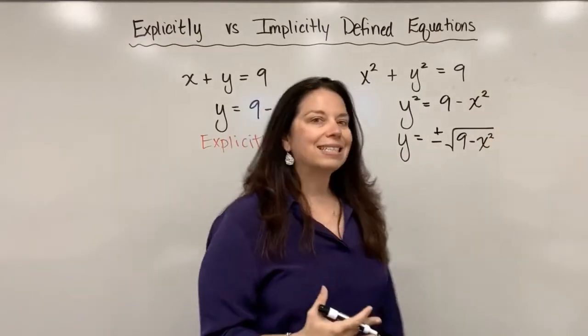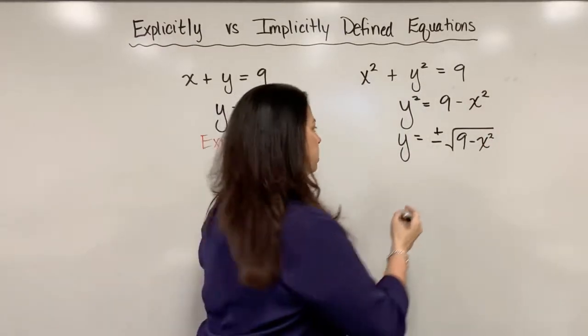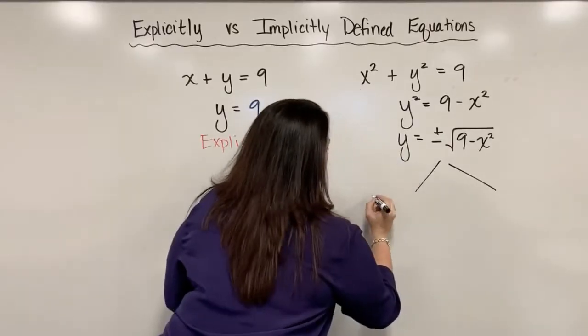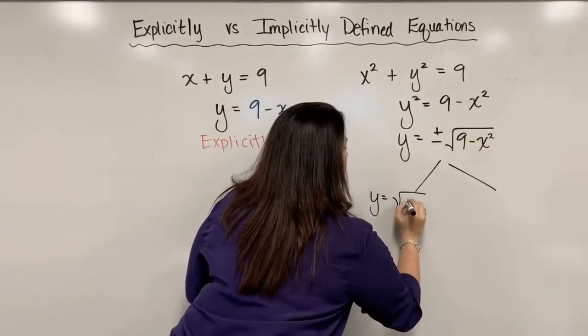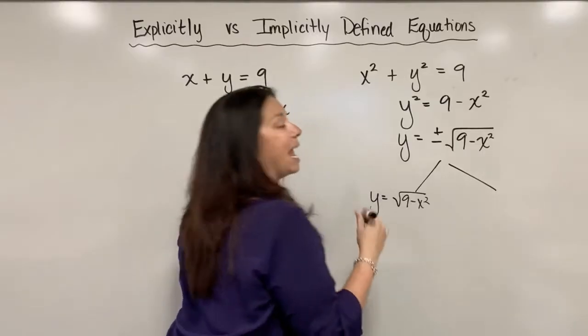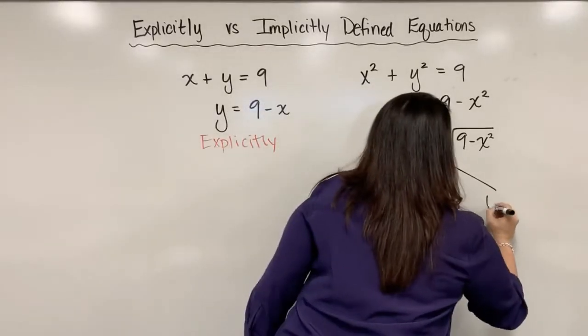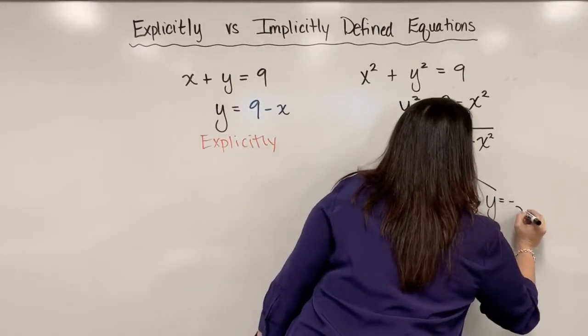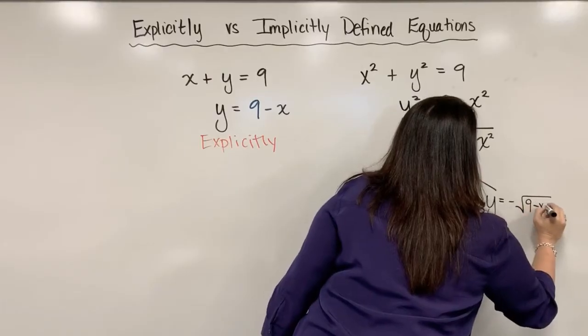So in essence, I get two equations here. I get an equation of y equals the positive square root of nine minus x squared, and also the equation y equals the negative square root of nine minus x squared.